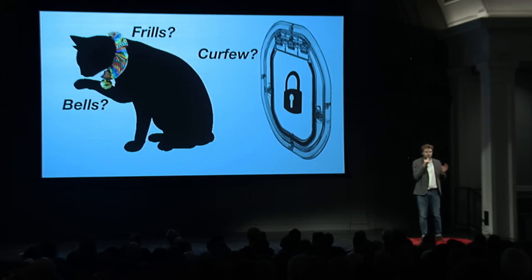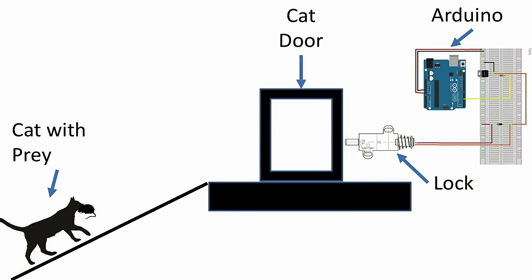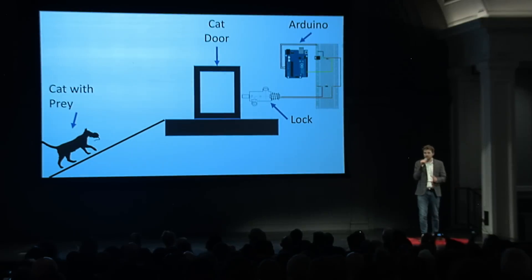I needed a cat door that would lock selectively when my cat was trying to bring in prey. The locking part is easy — I use an Arduino, which is an electronics kit for dummies, and I attach it to a lock.